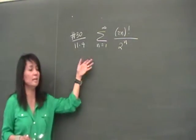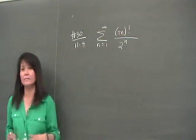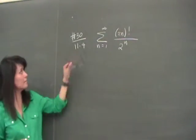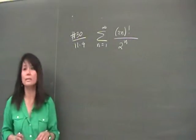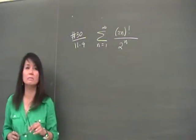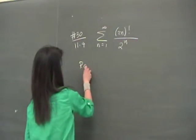Okay, so before we move on, I don't think we've had any exercise yet involving the factorial. Celica asked about number 30, 11.4. So what kind of test can we use here? Ratio. So we said that when there is a factorial, usually you use the ratio test.